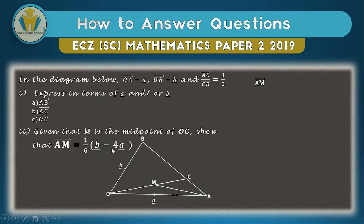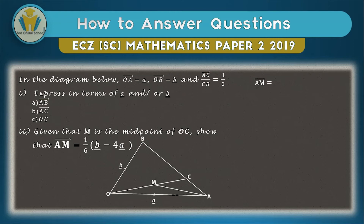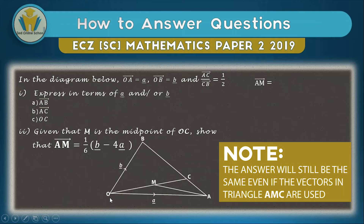Part two asks us to show that AM equals one-sixth (b minus 4a). This type of question is actually straightforward because we already know the answer — if your working doesn't match, you know it's wrong. We've also been told M is the midpoint of OC, so vector OM equals vector MC. To find AM, we use vectors AO and OM.